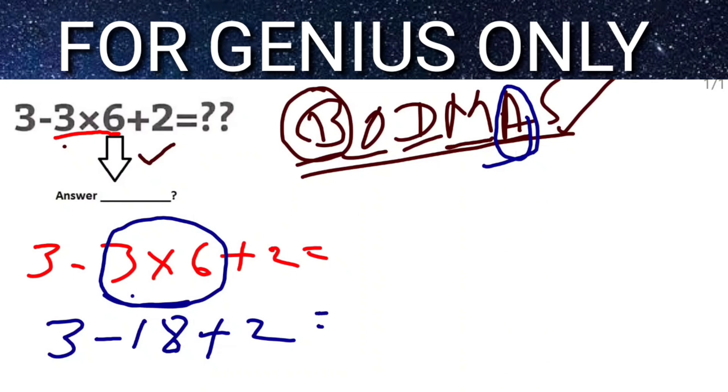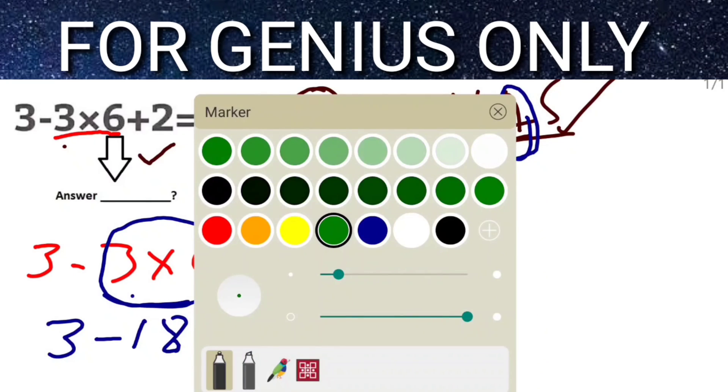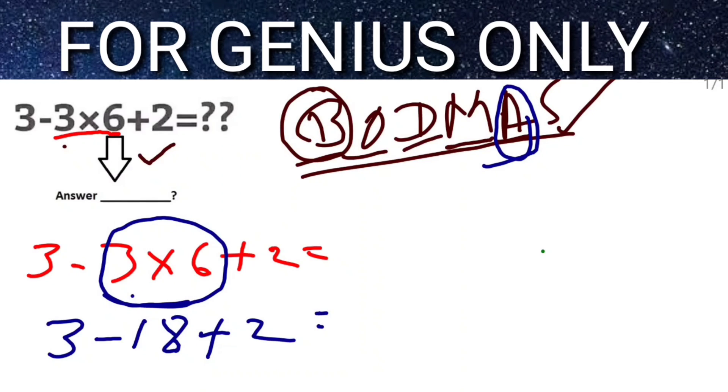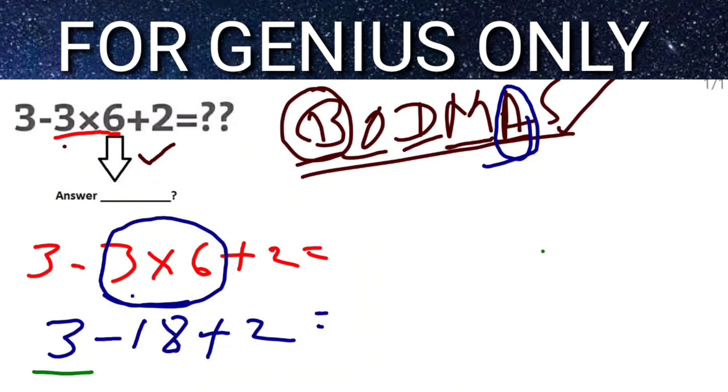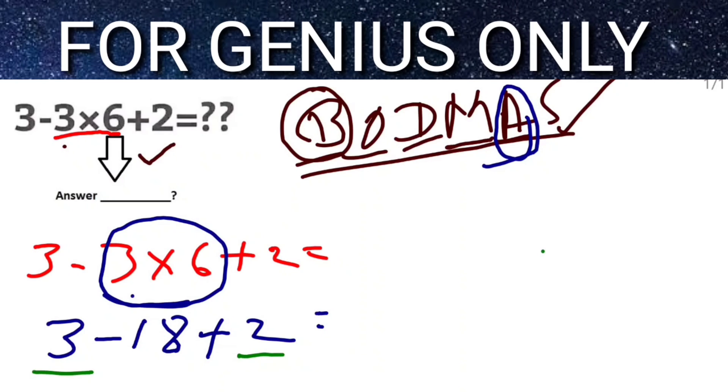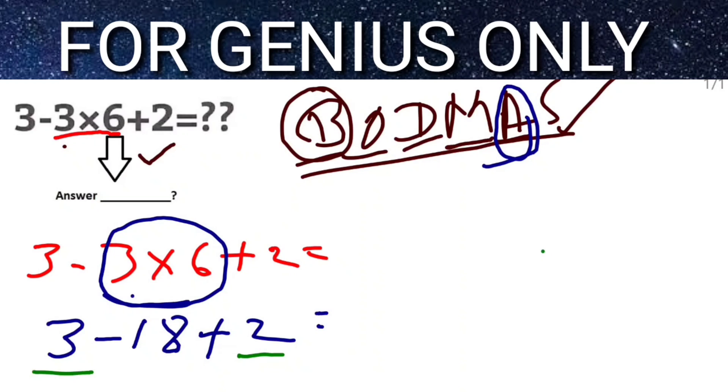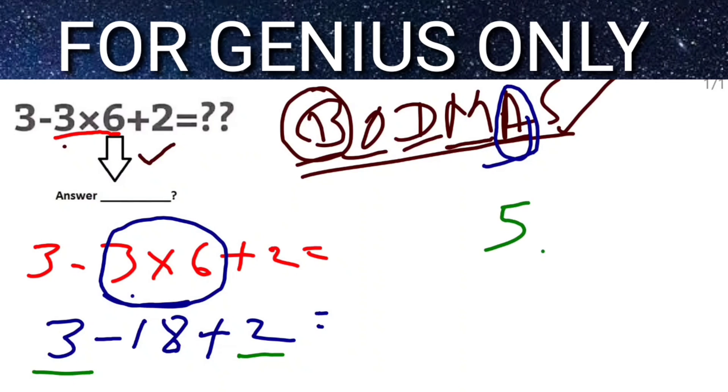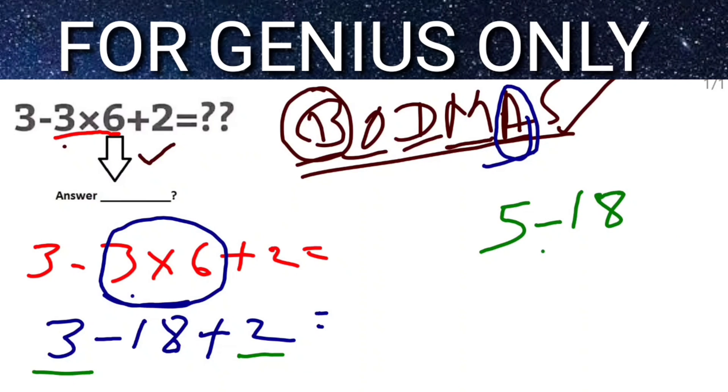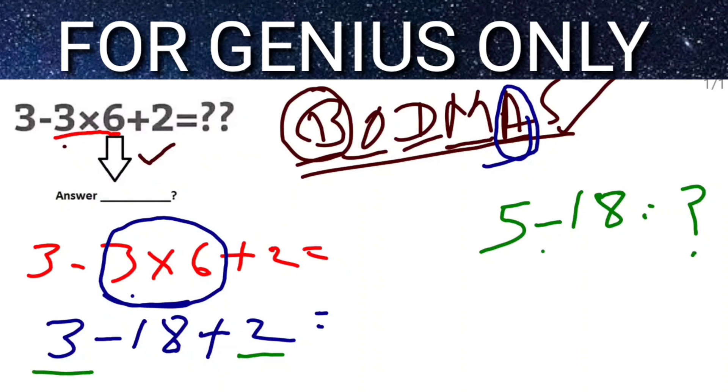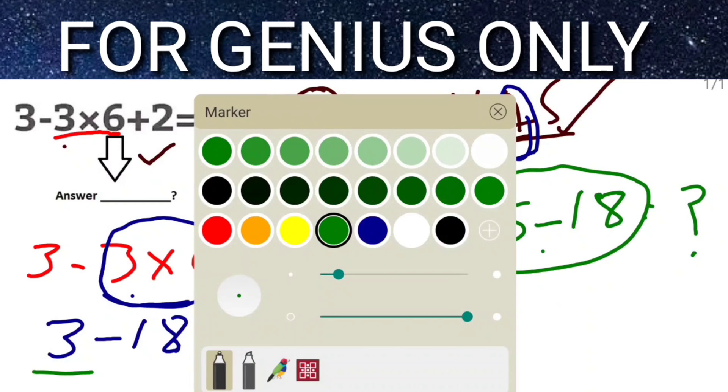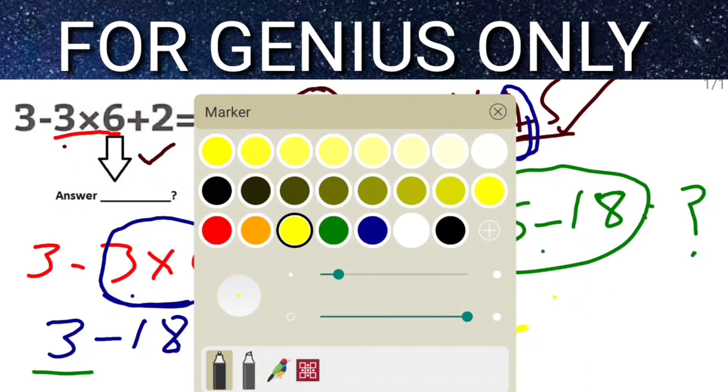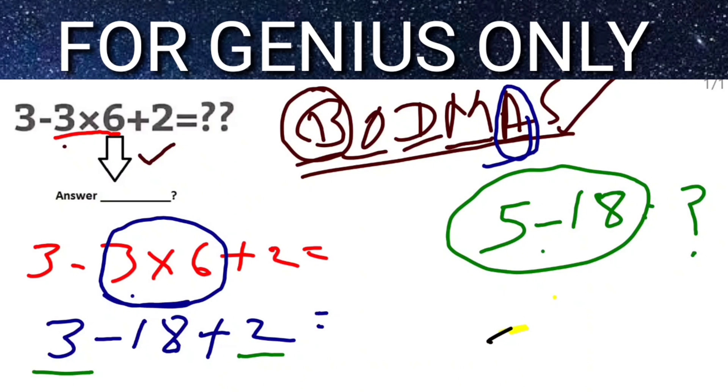After that, what do I have to do? I have to do addition first. Addition means 3 + 2 = 5. Then subtract: 5 - 18. The answer will come as minus 13. The answer is -13.